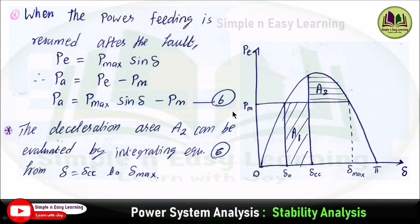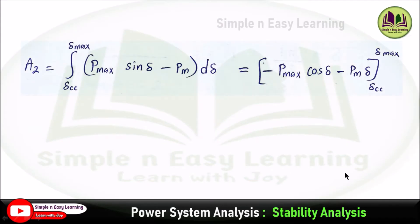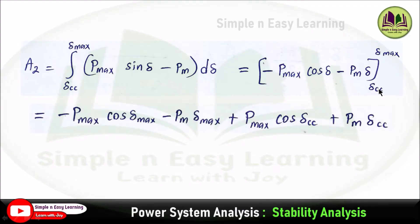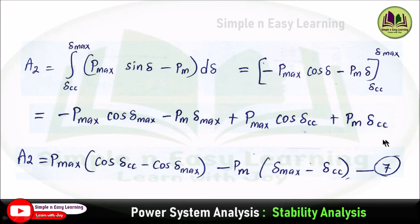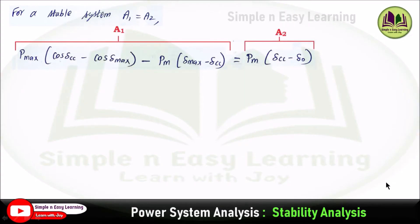The decelerating area A2 is evaluated by integrating equation six from del_cc to del_max: A2 = integral from del_cc to del_max of (P_max × sin(del) − P_m) d(del). Integrating: the term P_max × sin(del) integrates to −P_max × cos(del), and P_m integrates to P_m × del. Applying the upper and lower limits gives A2 = P_max × (cos(del_cc) − cos(del_max)) + P_m × (del_max − del_cc) — this is the seventh equation.